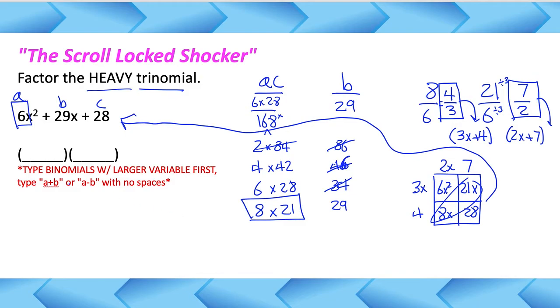Now how do you type these answers in Schoology? Good question. Type the binomials with the larger variable first. So type it as a plus b or a minus b with no spaces. So our largest variable is 3x. So we want to type this 3x plus 4 with no spaces. And then we have 2x plus 7. You're going to be the smaller variable. 2x plus 7 is going to go second. So be careful there. You may get a larger variable for your second binomial but please type it accordingly.